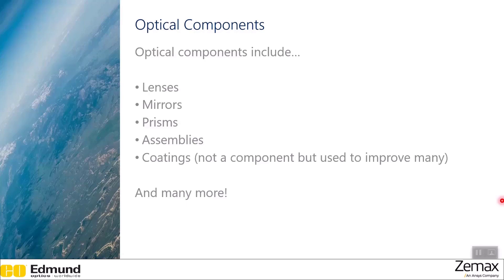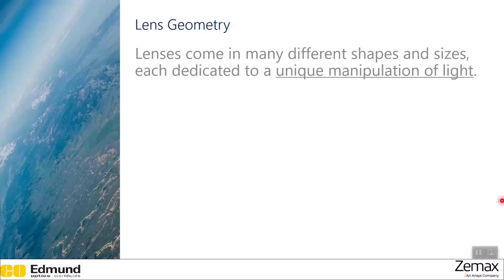The first one we'll talk about are lens geometries. Lenses come in many different shapes and sizes, each dedicated to a unique manipulation of light. In the next few slides, we'll take a look at a few of the typical lens geometries you might see, as well as be introduced to some more unique shapes and sizes of lenses.